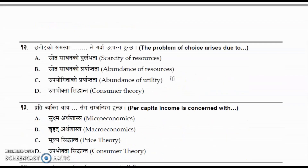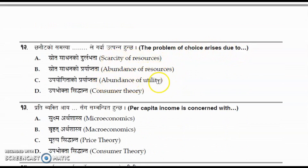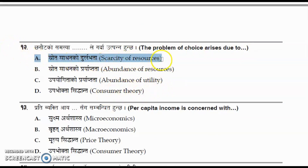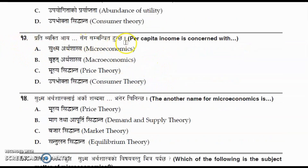Question number twelve: the problem of choice arises due to which of the following? The options are scarcity of resources, abundance of resources, abundance of utility, and consumer theory. The correct answer is scarcity of resources — evidently the problem may arise due to this.